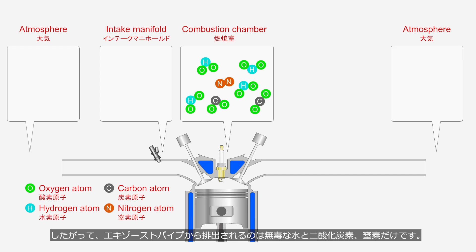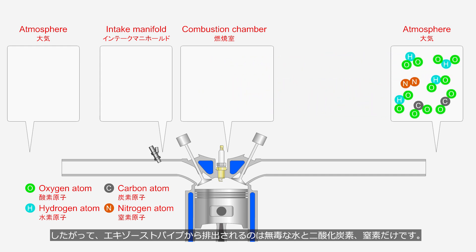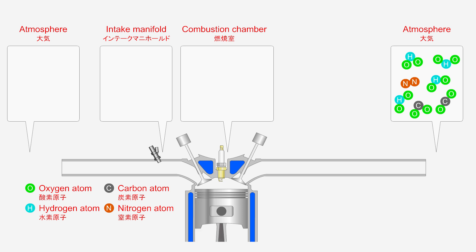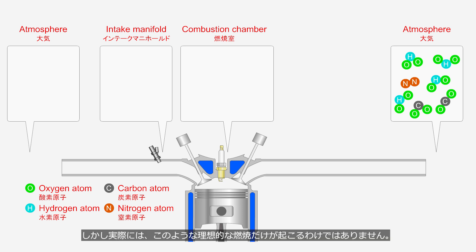Therefore, the only non-toxic substances emitted from the exhaust pipe would be water, carbon dioxide, and nitrogen. However, in reality, it is not only this kind of ideal combustion that occurs.